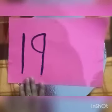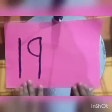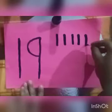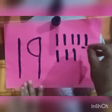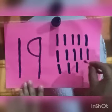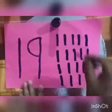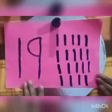Now learners, our next activity is drawing 19 standing lines. Let's begin: 1, 2, 3, 4, 5, 6, 7, 8, 9, 10, 11, 12, 13, 14, 15, 16, 17, 18, now 19. So how many lines did we draw? 19 standing lines.